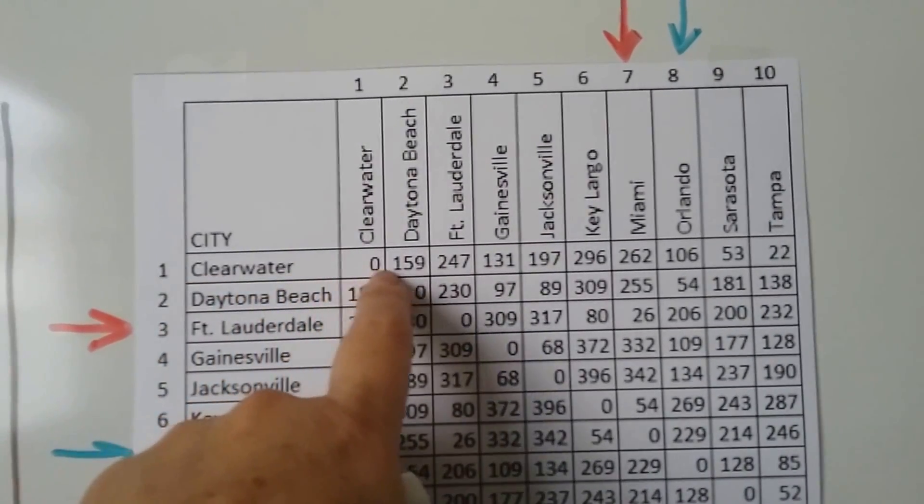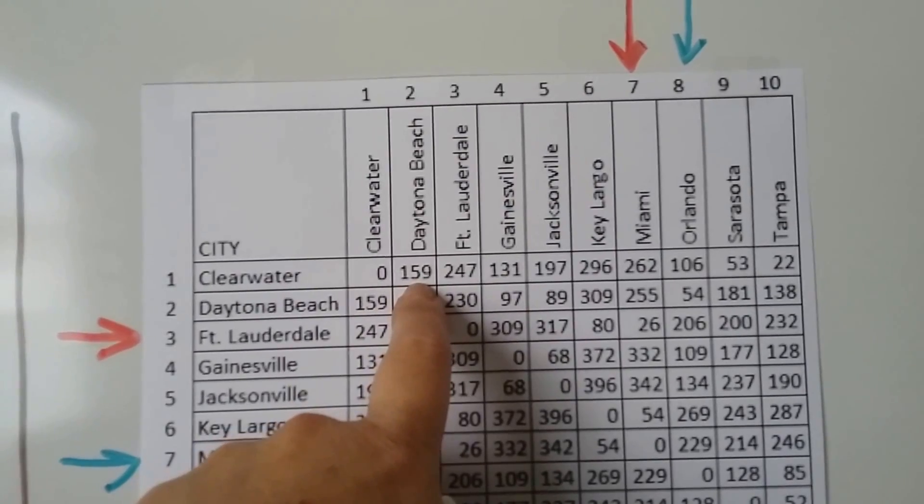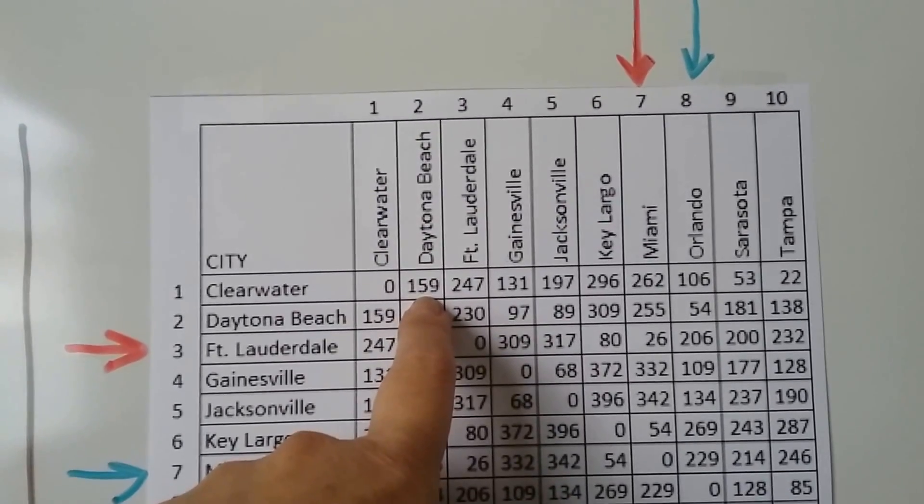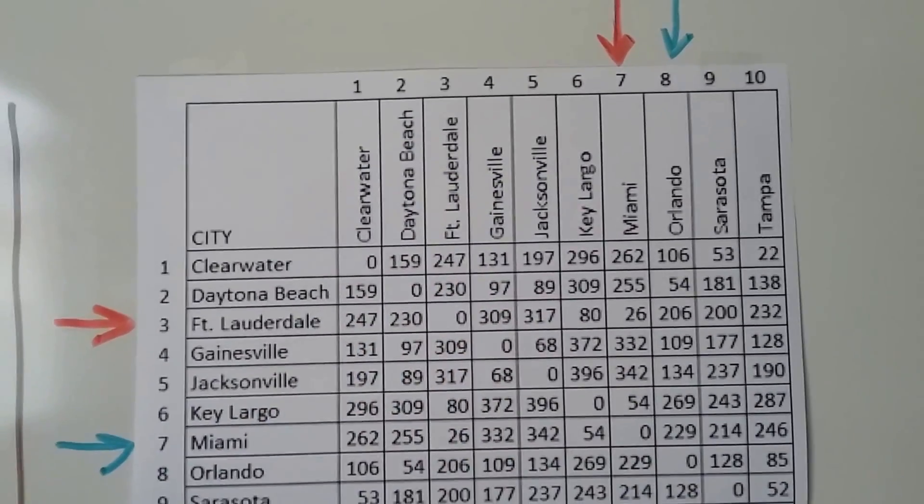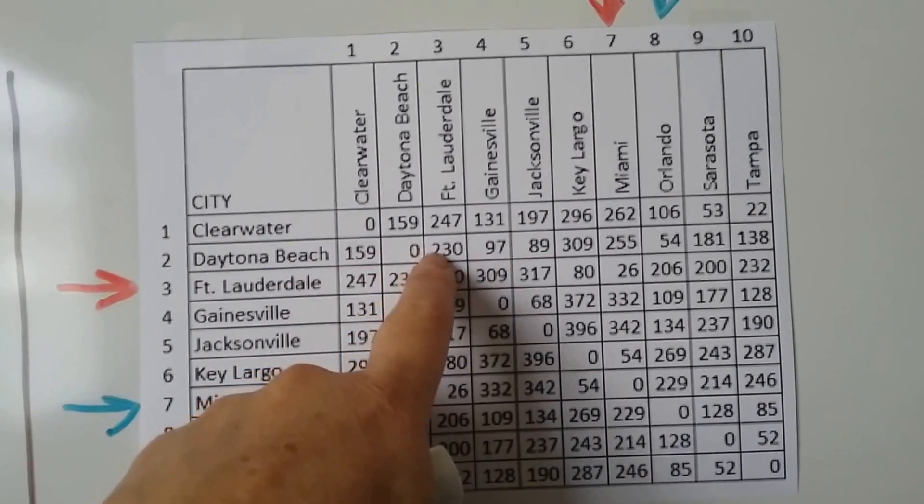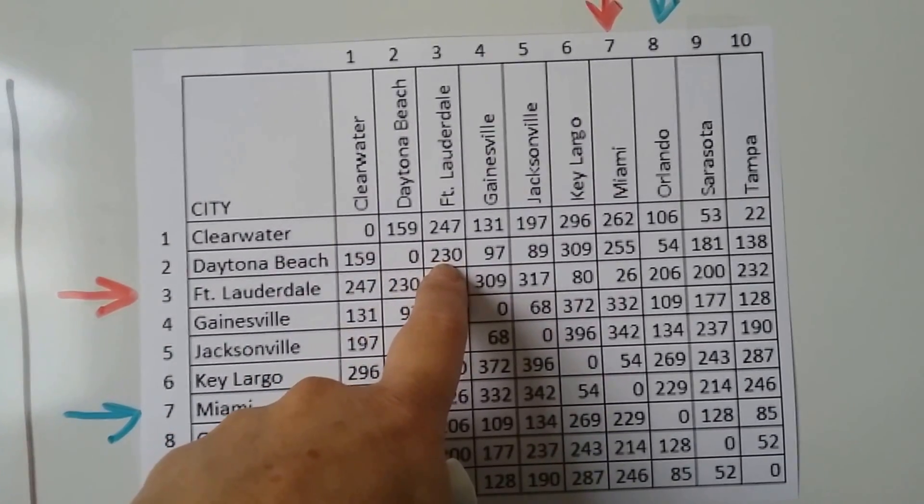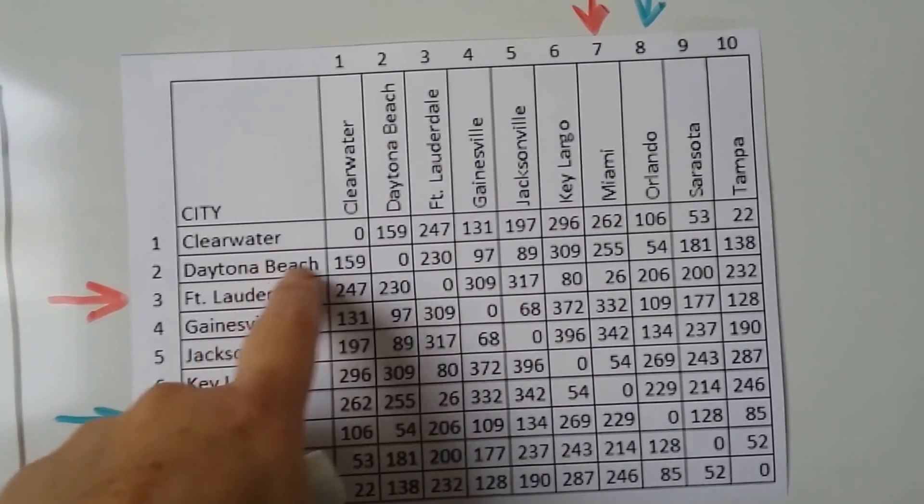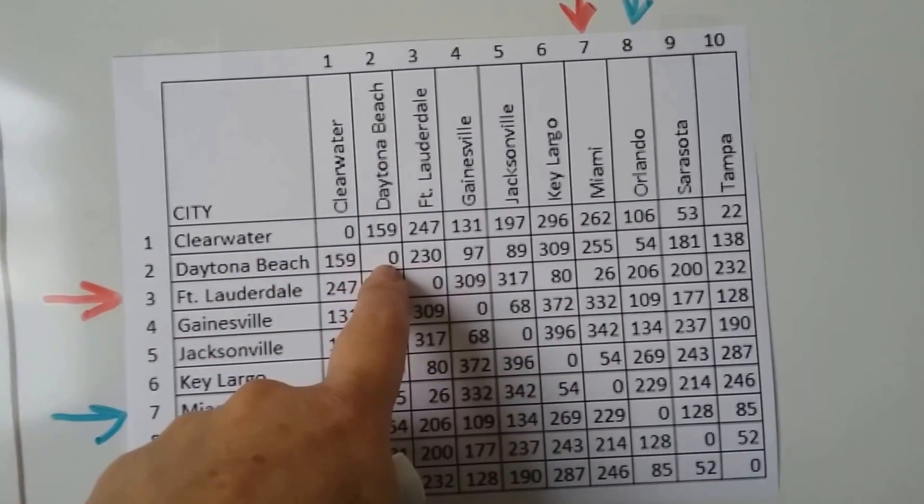But to go from Clearwater, Florida to Daytona Beach, it's 159 miles. To go from Daytona Beach to Fort Lauderdale is 230 miles. But to go to Daytona to Daytona is zero. Because you're already there.